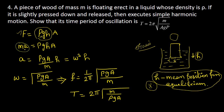Acceleration is equal to rho into g into A divided by m, into h. Here h is the variable — the displacement from the equilibrium position. So acceleration is equal to some constant k into x. We know that for simple harmonic motion, acceleration equals omega squared times h, so omega squared equals rho g A divided by m.